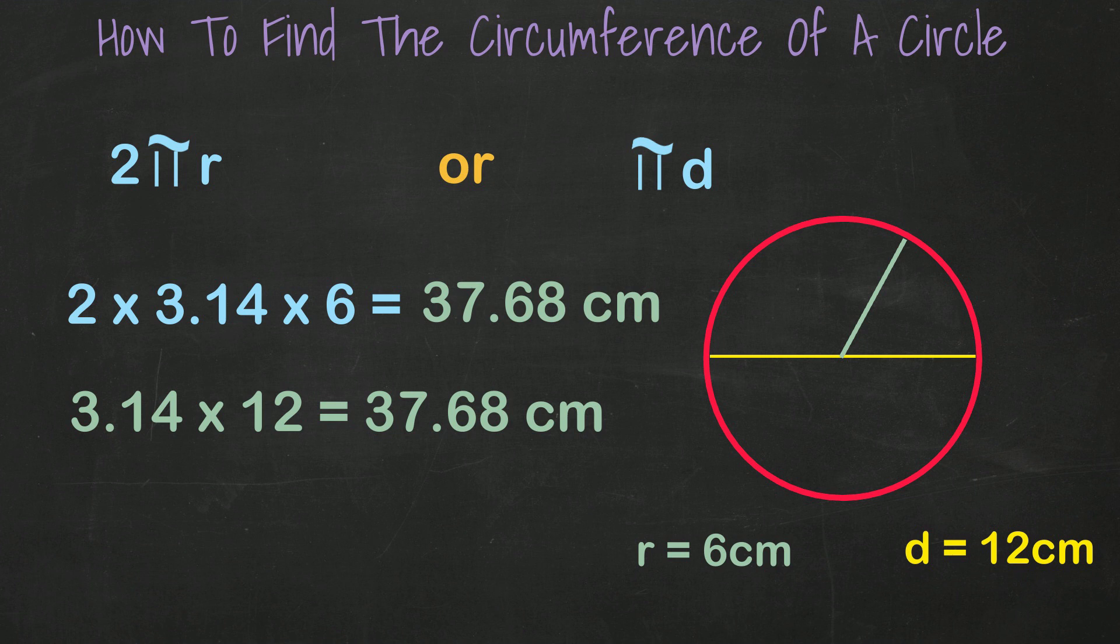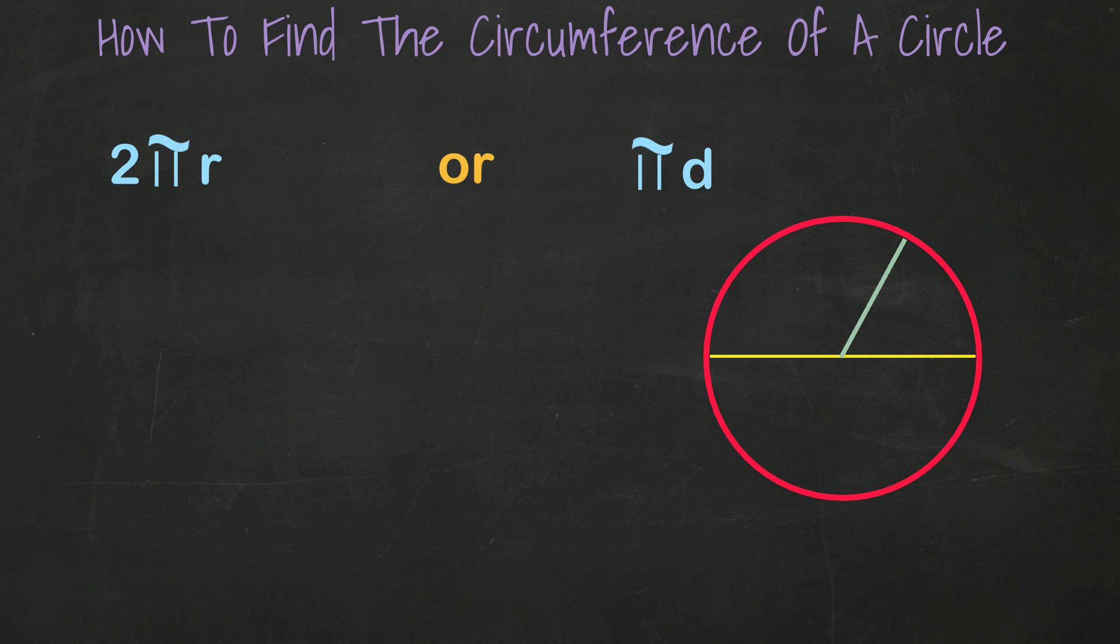One more example. Find the circumference of a circle with a diameter of 15 centimeters. We take pi of 3.14 times 15 centimeters, and we get 47.1 centimeters.